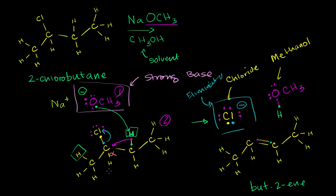In order to have an E2 reaction — and actually the rule will hold for E1 reactions as well — the hydrogen has to get swiped off of a beta carbon. A beta carbon is just a carbon that's one away from the alpha carbon. So this is a beta carbon, and this is also a beta carbon. And so it's completely reasonable to think that the base could swipe it from either one.